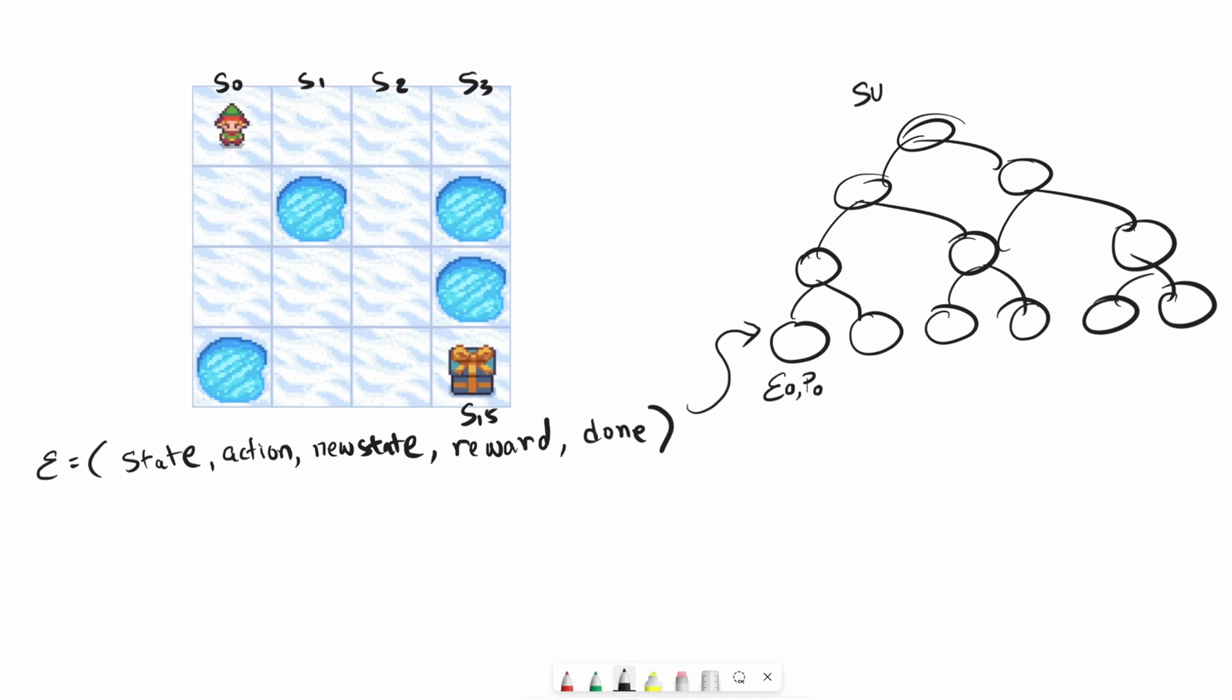I'm not going to go into how a sum tree works because that's a whole video on its own. Just know that this sum tree data structure helps us get a sample of the experiences based on the priority that we assign to each one of the experience. Let's talk about how to assign the priority.